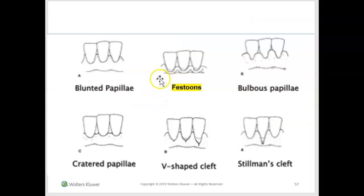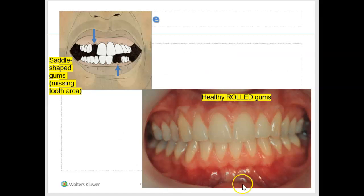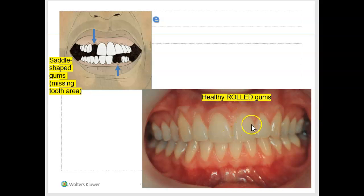We could also have cleft margins. A cleft is basically a notch that you see going down the margin — this is something we can see in people who might have periodontitis. Sometimes you might not even see rolled gums; sometimes you just might see flat gums with no pronounced U at the bottom, no rolling, and that is also considered normal. You can have healthy rolled gums, or you could have rolled gums that are not necessarily healthy — rolled gums can be either healthy or diseased.